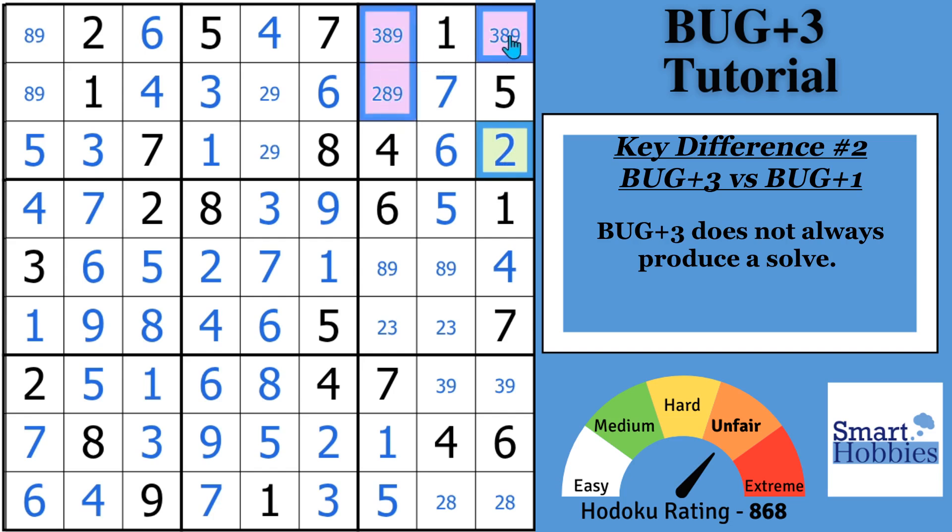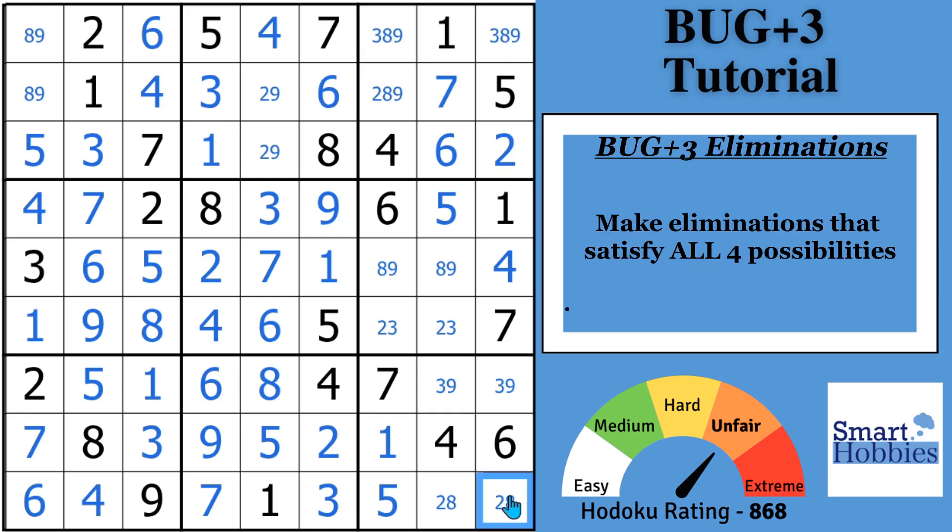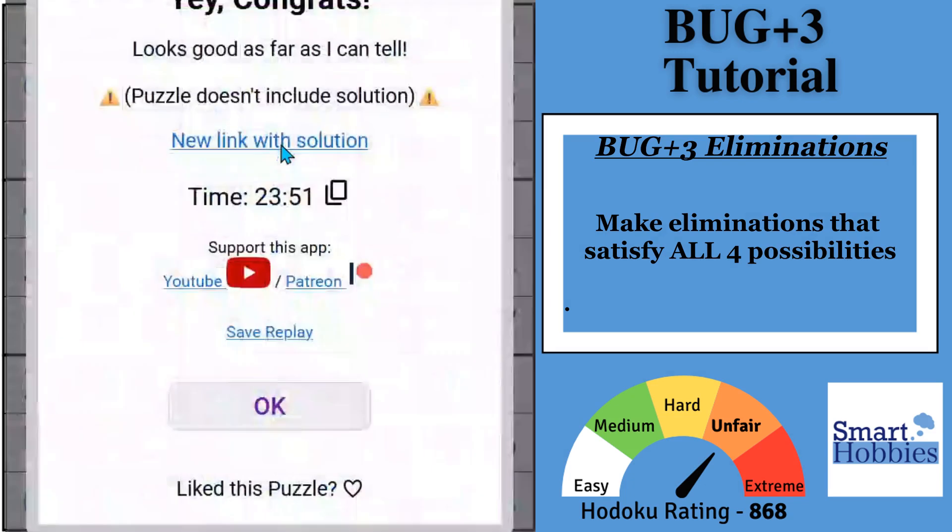And then what would that do for the rest of the puzzle? If this is a 2, you can see that's an 8, that's a 2. And then that's a 3, that's a 2. You got a 9 here, a 3 here. And then you're going to put the 9 there. And with this 9, you got 8, 9 right there. And you're going to put an 8 right there. 3 here. 8, 9 right there. 2, 9 right here.